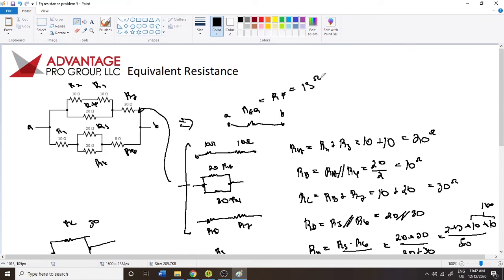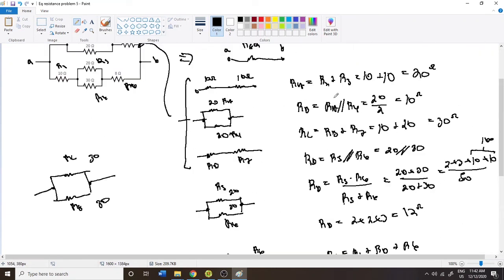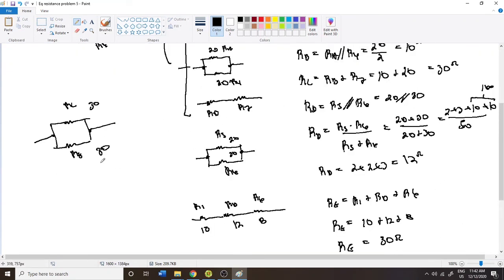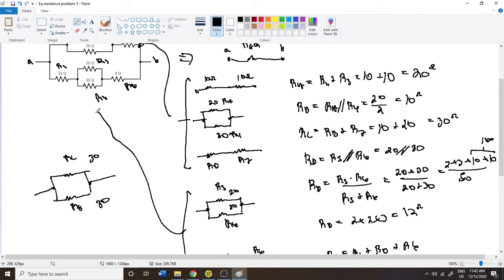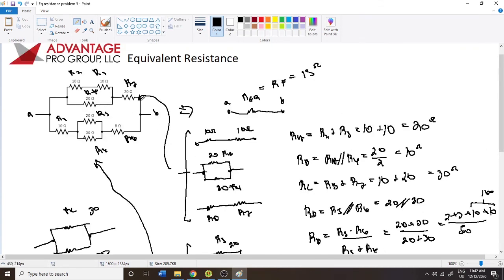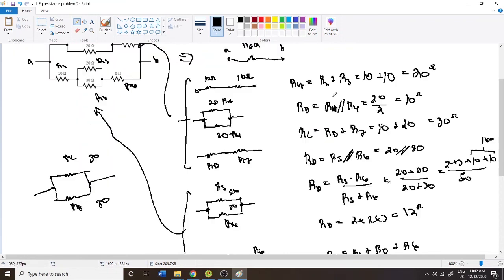Kind of a long problem today but this is how these invariably end up very long problems. All of this work down here was the lower branch, all this work was the upper branch, and then from those two parallel combinations we can get 15 ohms. Thanks for watching, I'll see you next time.